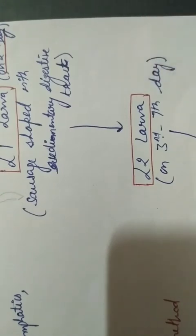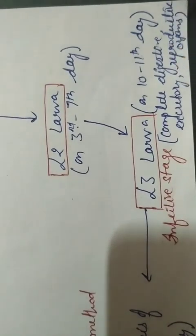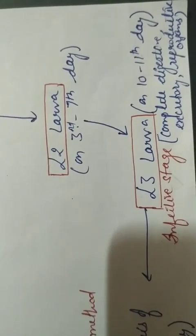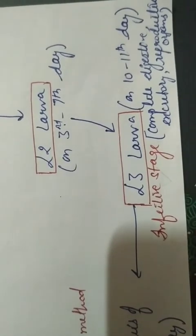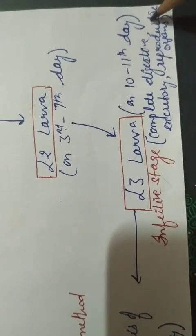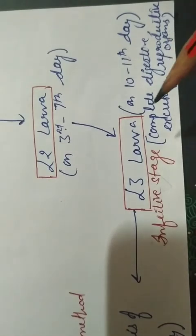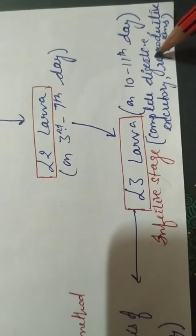Finally, the third larva is formed on the 10th to 11th day. This third larva is the infective stage for the human being. It has a complete digestive tract, excretory organs, and reproductive organs. We do not call it an adult because in the adult the reproductive organs are mature, whereas in this larva they are not yet mature.